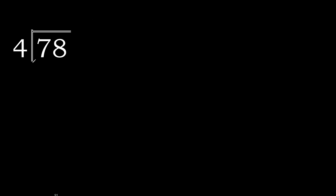78 divided by 4. 7 is not less, therefore with 7: 4 multiplied by which number is nearest to 7 but not greater? 4 multiplied by 2 is 8 — 8 is greater. 4 multiplied by 1 is 4, is not greater. 7 minus 4 is 3.